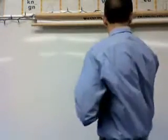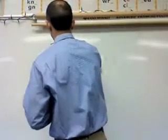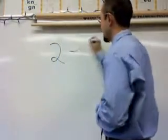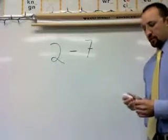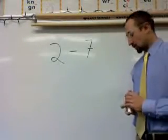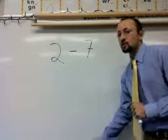So let's look at our first problem. If I take two and I subtract seven from it, some of you already know that we're going to end up with a negative answer, but I'm going to show you an easier way how to do this.